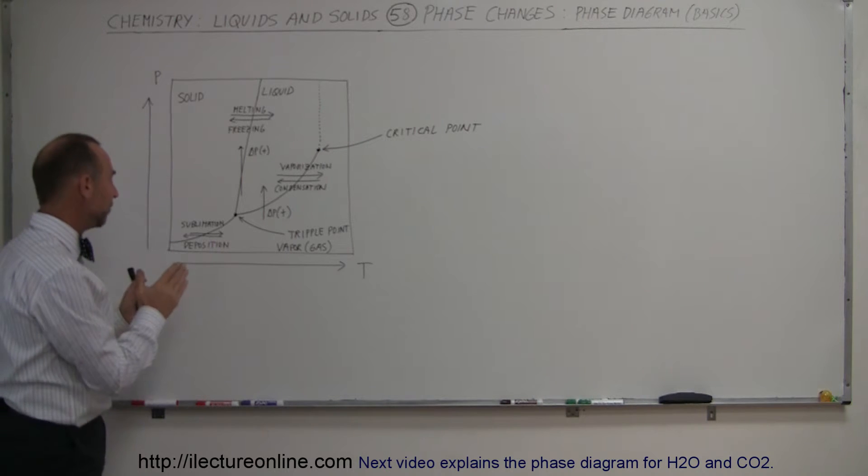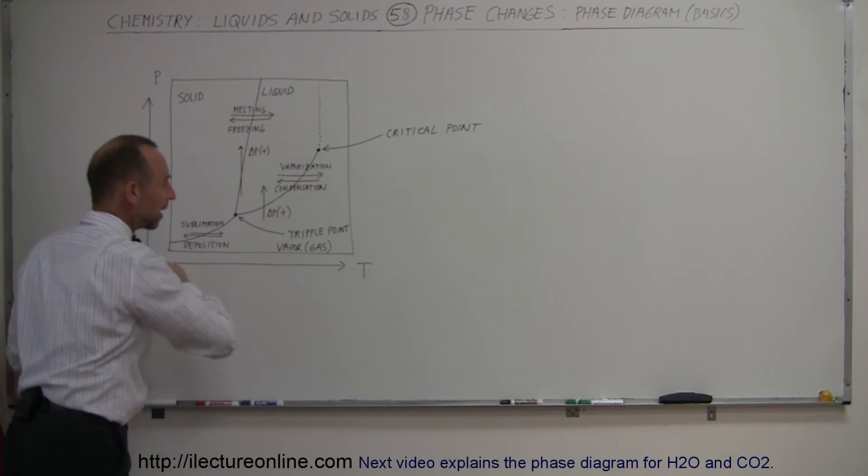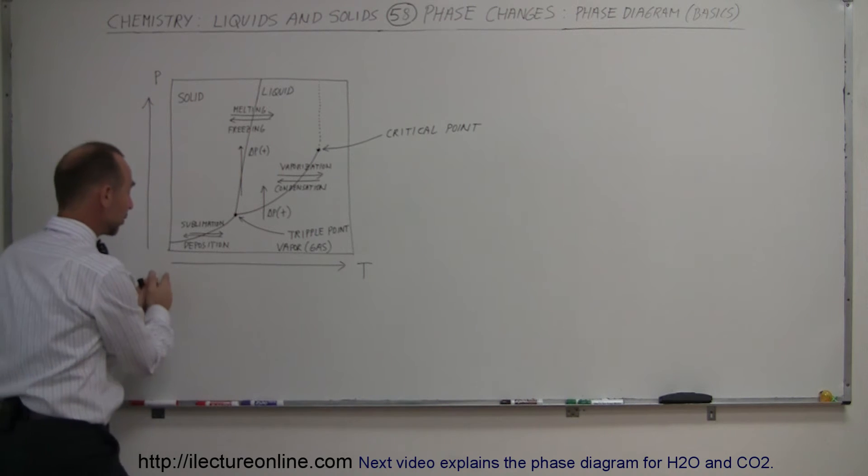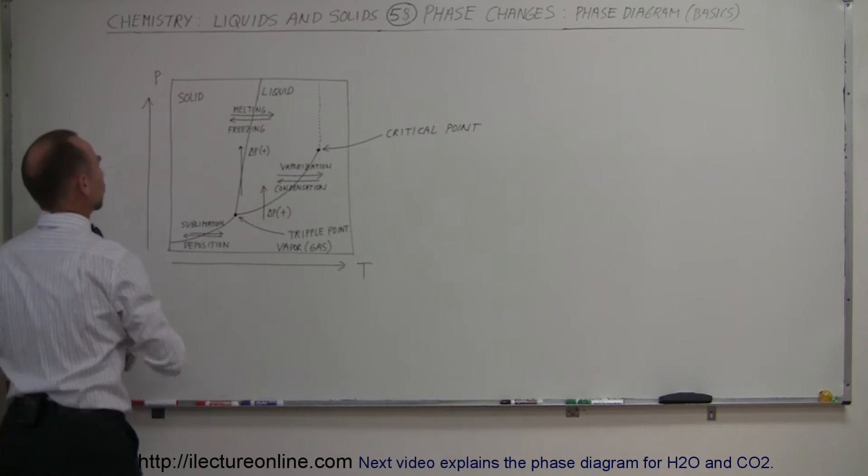But here, this is what we have. We have pressure on the vertical axis, temperature on the horizontal axis, which means when you go to the right the temperature increases. When you go from the bottom to the top, the pressure increases.